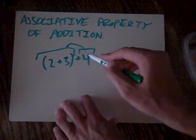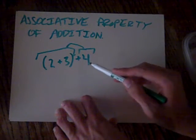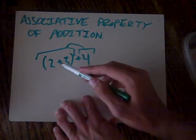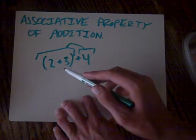So this comes first and then that. Basically, that's what the parentheses mean sometimes. Sometimes they mean multiplication too, but this time they mean do this first.